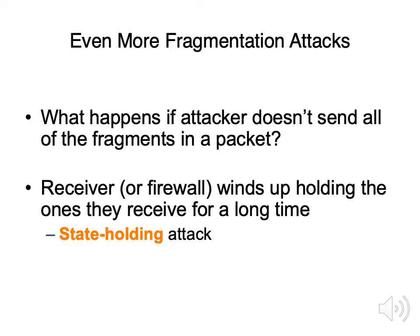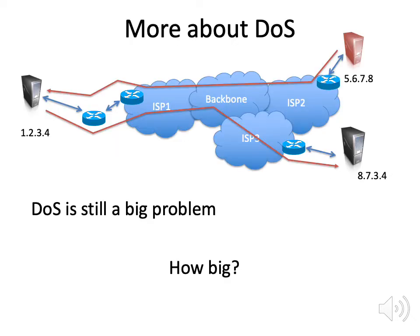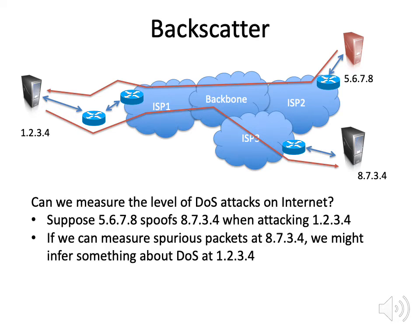Now let's look at denial of service attacks and how we can measure how big a problem they are. We hear about them in the news, but don't know in general how many are occurring. Researchers had the idea of using backscatter: if an attacker at address 5.6.7.8 attacks host 1.2.3.4 by spoofing address 8.7.3.4, we could see unexpected packets arriving at 8.7.3.4 that server 1.2.3.4 generated. By measuring how many such packets there are and what kinds they are, we can learn something about what attacks are going on, even if we can't tell who is launching them.